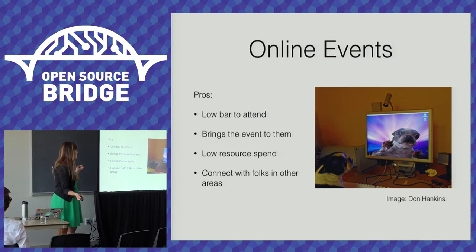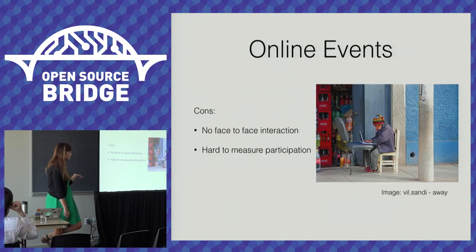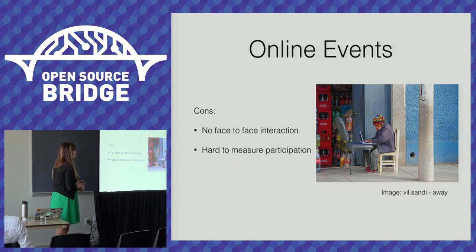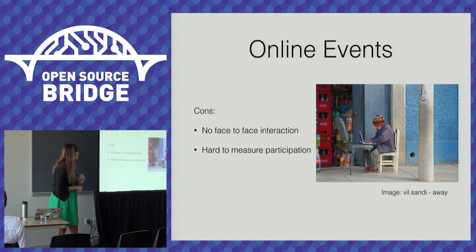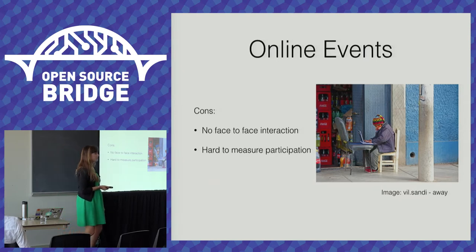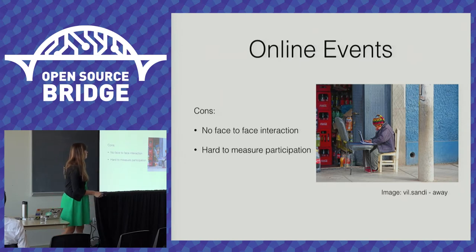The cons of online events are that you're not having face-to-face interaction or the higher-level, deeper conversations that build stronger bonds. We've also had a really hard time measuring participation — we're building some in-house tools for Pound Puppet Hack to distinguish tickets being closed by community members at the event versus tickets closed by our engineers.